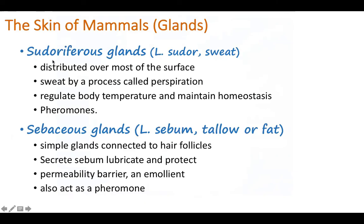Now we talk about the glands in mammalian skin. There are two types of glands. The first are sudoriferous glands, also called sweat glands — 'sudor' means sweat. These glands are distributed all over the surface and produce sweat through a process called perspiration, by absorbing water and salts from the lower skin and secreting them to the outside environment.